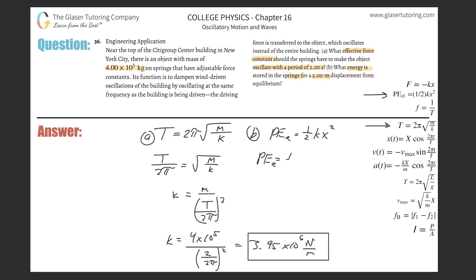This is just simply plug in. So this is 1 half times that force constant of about 3.95 times 10 to the 6th, all then multiplied by 2 meters squared. And let's see what we get. So we're going to take that value, multiply it by 0.5, then multiply it by 2 squared. So we get a potential energy of about 7.90 times 10 raised to the 6th.